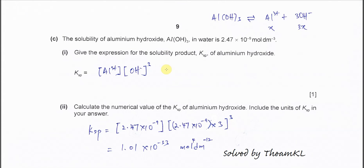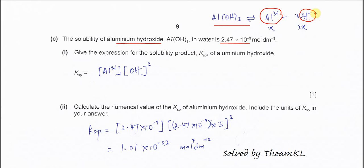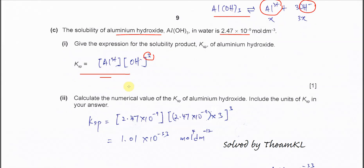Part C. The solubility of aluminum hydroxide is 2.47 × 10⁻⁹. Part one: give the expression for the solubility product Ksp of aluminum hydroxide. First, form the equilibrium equation: aluminum hydroxide partially dissolves to give one aluminum ion and 3 moles of hydroxide ions. From this, Ksp = [Al³⁺][OH⁻]³. The power 3 follows the coefficient of the hydroxide ion in the equilibrium equation.